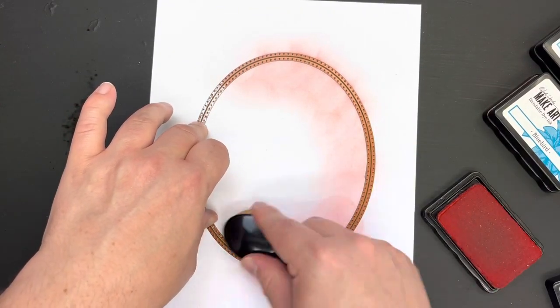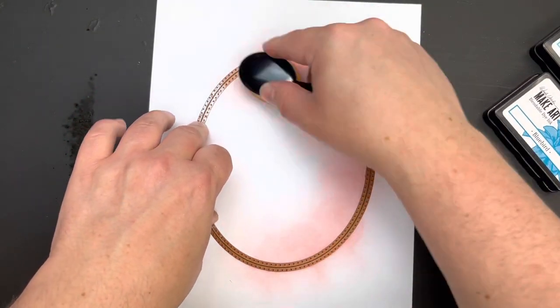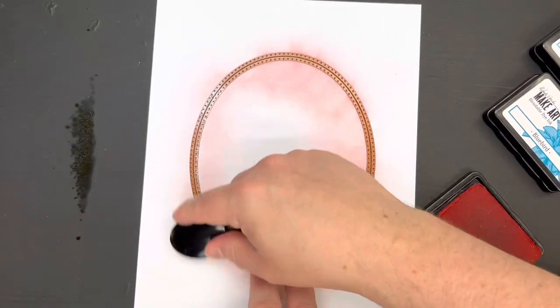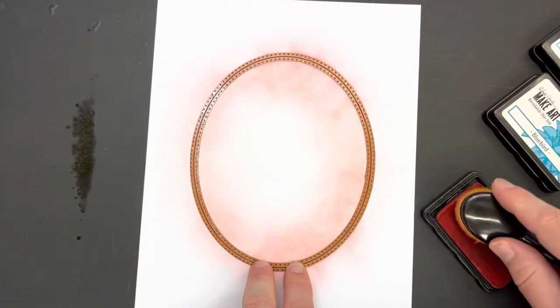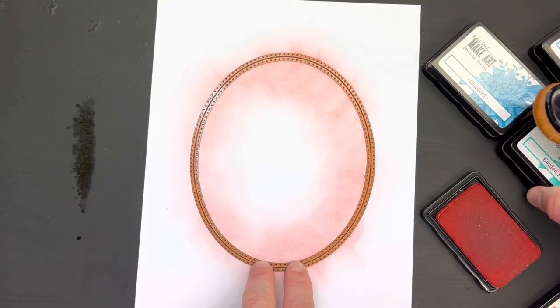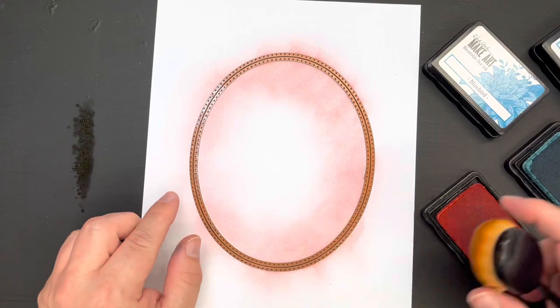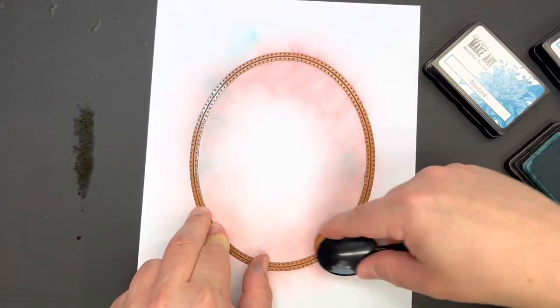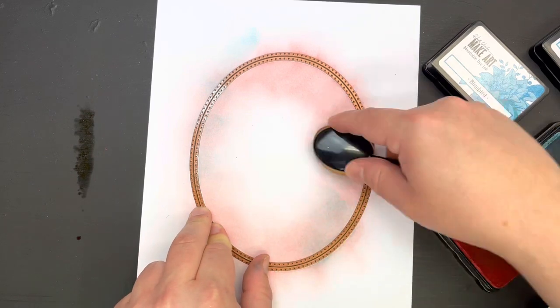This time we are going to use some Wendy Vecchi Make Art Blender Blinks and we're just going to use a Vassan Creative Blending Brush to go over the top of the die, holding it in place, adding our color over the top. Now of course these are metal dies so they don't tend to move or misshape although they're very thin as we go to color over the top of them which is a true bonus.